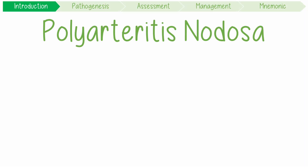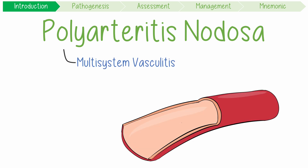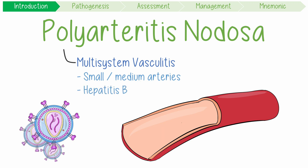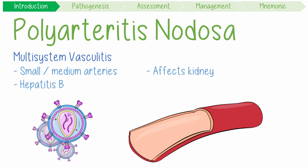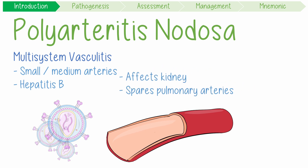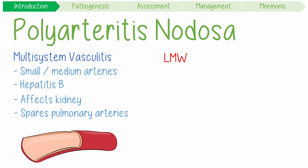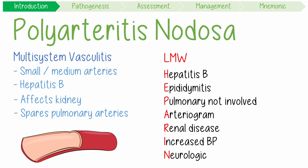Polyarteritis nodosa, or PAN, is a multi-system vasculitis of small and medium-sized arteries, commonly associated with hepatitis B in middle-aged men. It characteristically affects the kidneys, notably sparing the pulmonary arteries. I use the mnemonic low molecular weight heparin to remember most of its features.